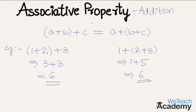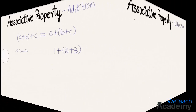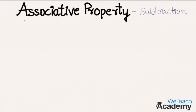Associative property of addition can be represented as (a plus b) plus c equals a plus (b plus c). Associative property is a closed operation. Now let us move further and discuss associative property of subtraction.